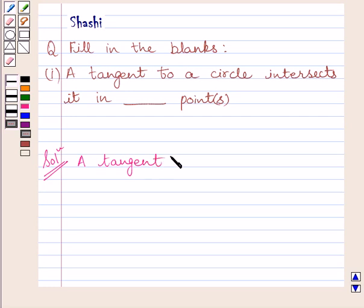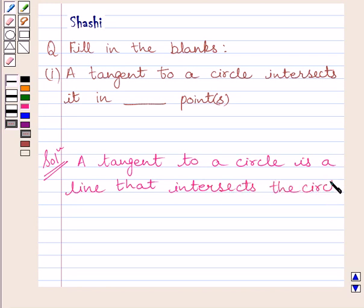So we can write a tangent to a circle is a line that intersects the circle at only one point.